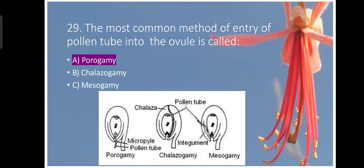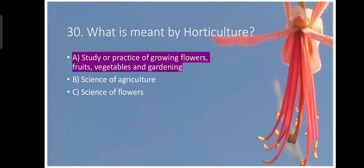Twenty-nine. The most common method of entry of pollen tube into the ovule is known as porogamy. Porogamy is the type of entry of pollen tube from micropyle. This is the common method. Question number thirtieth. What is meant by horticulture? Horticulture is the study or practice for growing flowers, vegetables, fruits and gardening.